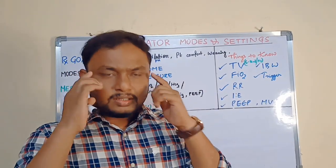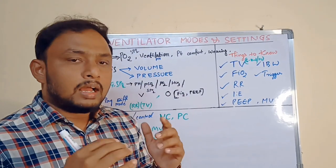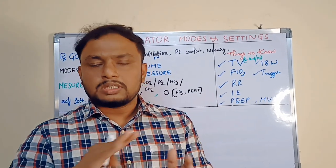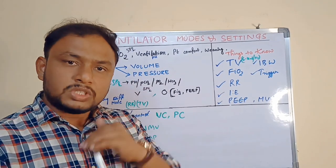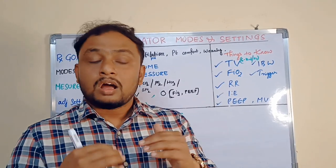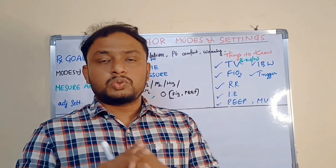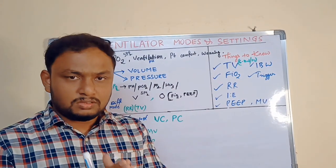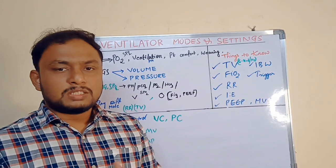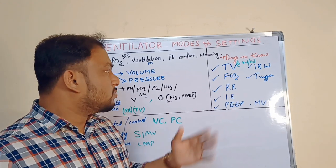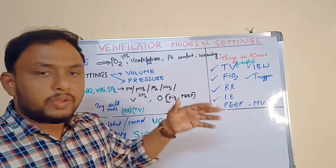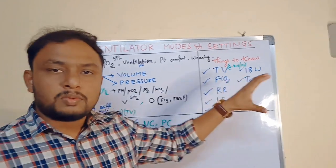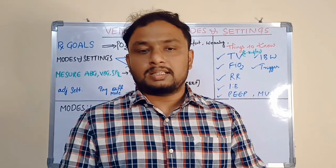What you need to do: you need to remember the treatment goals, and you should know the modes and settings — how to change the settings and modes, and on which basis you need to change. Based on the ABG values, VBG values, or SpO2 values on the patient's monitor. Before moving further, what are the common terminologies you will see on the ventilator?